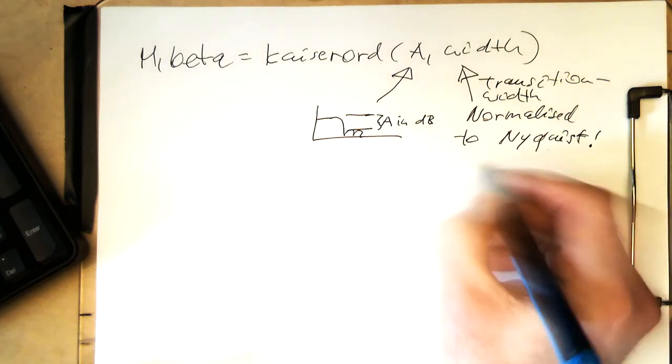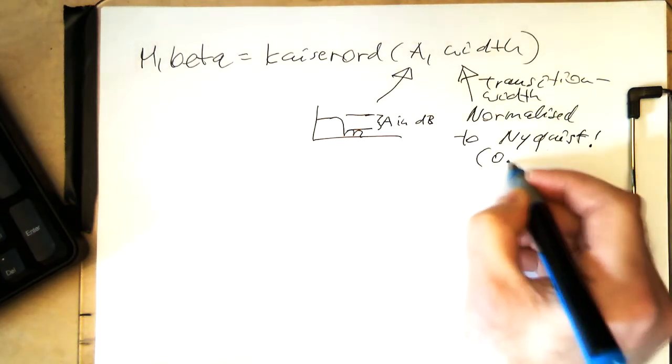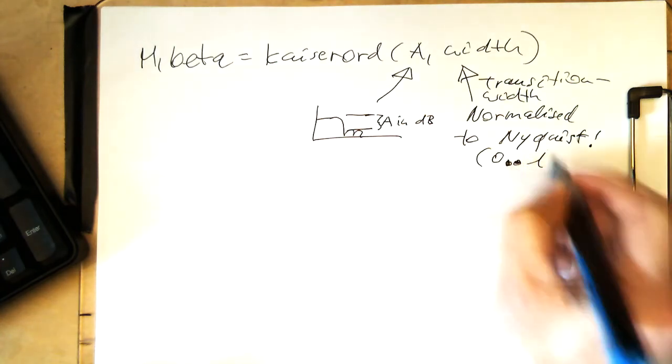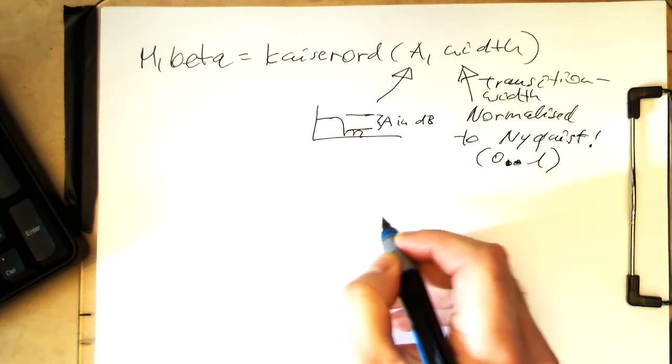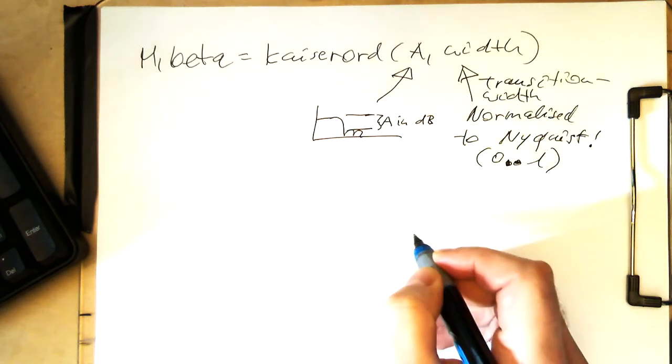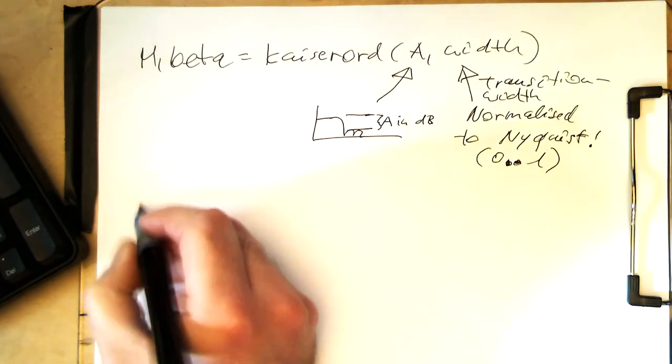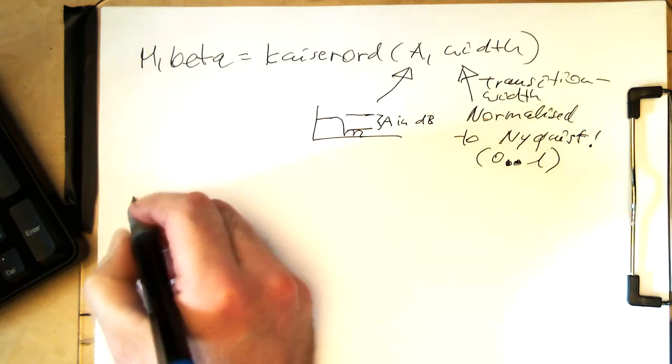Transition width normalized to Nyquist. So that can run from zero to one. And defines our transition width. And so with that, then we are able to generate our Kaiser window.